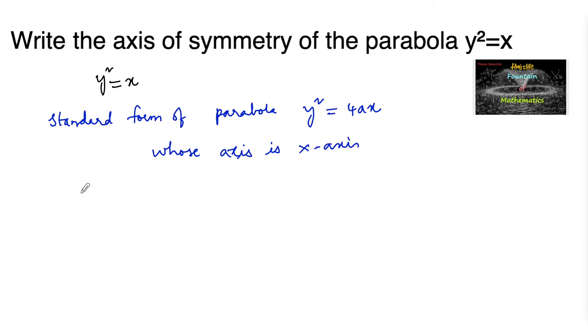Clearly here, y²=x can also be written as y²=4×(1/4)×x, where a=1/4. So we can say that its axis is also the x-axis.